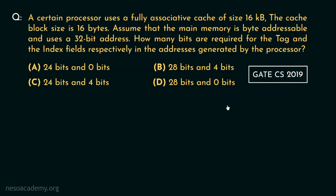I'll reveal the oddity of the question while solving. The question states: a certain processor uses a fully associative cache of size 16 KB, meaning the cache is 16 KB size and it's a fully associative memory mapping technique. The cache block size is 16 bytes, meaning each line of the cache is 16 bytes. Assume that the main memory is byte addressable and uses a 32-bit address.